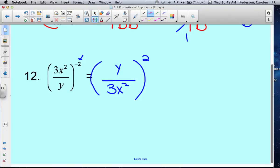So we distribute it into this fraction and then that fraction. So it's y squared over 3x squared squared. Well, the numerator stays as it is, but then the denominator I have to distribute again.